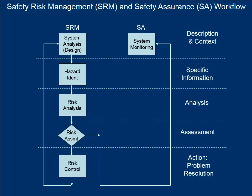We now move to the safety assurance side of the workflow and step through the same five basic steps of a decision-making process while observing the system operation as it acquires data and uses the risk control processes that have been designed and documented. Monitoring and management of these documented processes is a critical part of safety assurance. In step two, data acquisition, needed data are gathered to test the controls. This data comes from a variety of sources such as continuous monitoring, periodic audits, and employee reporting systems.